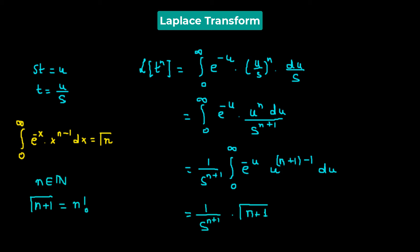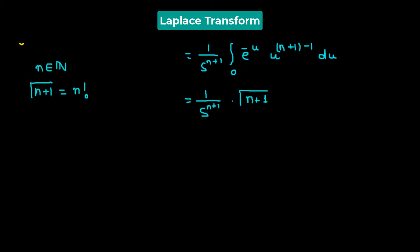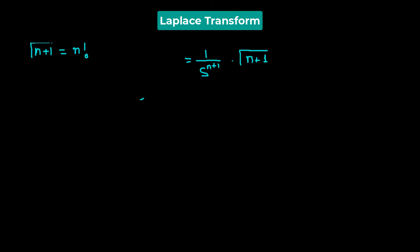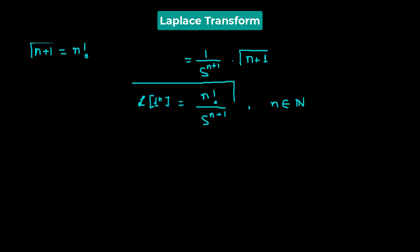Therefore, the Laplace transform of t raised to the power of n equals n factorial over s raised to the power of n plus 1, where n is a natural number. This is the Laplace transform of the given function t^n.